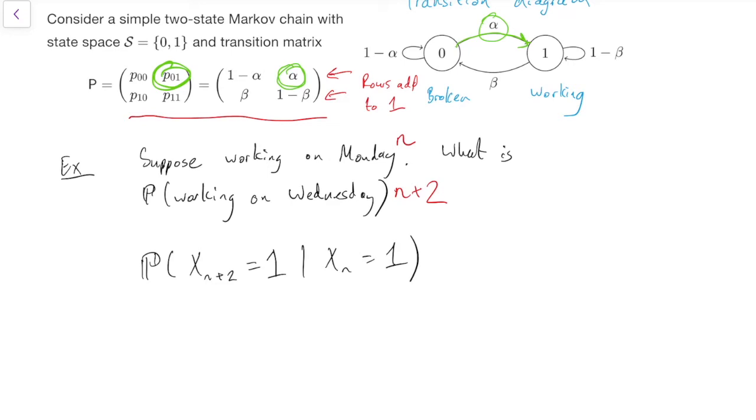Now, this is tricky, because if that were X_{n+1} equals 1, we'd say it's just the transition probability, 1 minus beta. But unfortunately, we're going two steps ahead. So we could call this a two-step transition probability. It's not just P11, which is the one-step transition probability. It's P11 open brackets 2, which is the probability we get there in two steps.